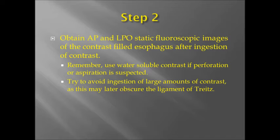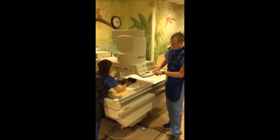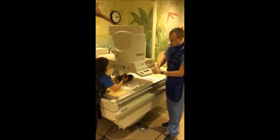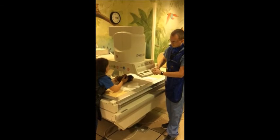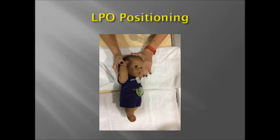Step 2: Obtain AP and LPO supine static fluoroscopic images of the barium-filled esophagus after ingestion of barium contrast. If the patient is at risk for aspiration, use diluted barium or a low osmolar contrast agent. If perforation is suspected, use a water-soluble contrast, not Gastrografin. Try to avoid ingestion of large amounts of contrast, as this can later obscure the ligament of Treitz. Here is an example of left posterior oblique, or LPO, positioning.